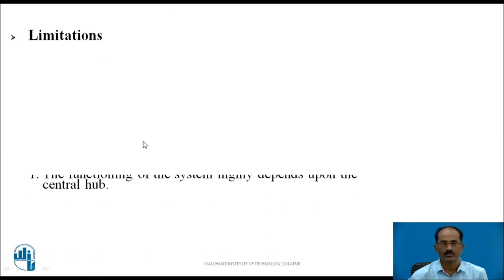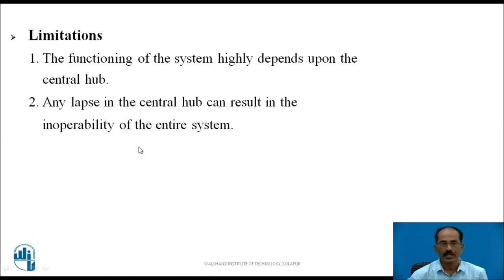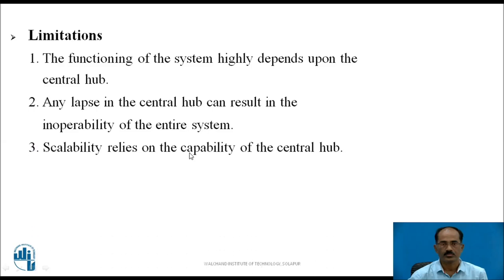Limitations of the star network: The function of the system is highly dependent on the central hub — the entire network depends on it. Any lapse in the central hub can result in inoperability of the entire system; if the hub has a problem, the entire system will not operate. Scalability also relies on the capability of the central hub.